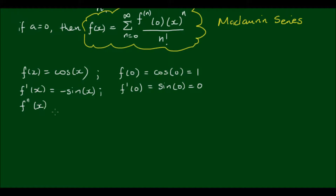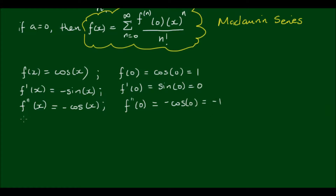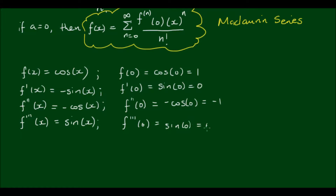The next term is the second derivative. Sine differentiates to cos, so we get negative cos of x, and evaluated at the point 0 it is equal to negative 1. The third derivative: cos differentiates to negative sine, so we're back to positive sine. Evaluated at the point 0 we have sin(0) once again, which equals 0.